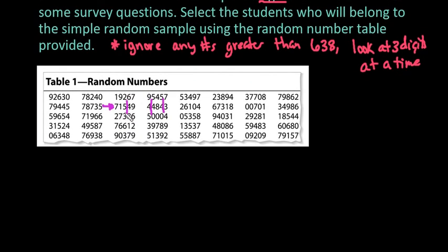So if you notice on our first one 715 is our first value that we're looking at. Well that one happens to be higher than 638 so I would ignore that one. So then I would look at my next number so 494 would be my first person. Then I would look at the next three numbers so 484 would be my next one and then I would look at the next three numbers which would be 326.